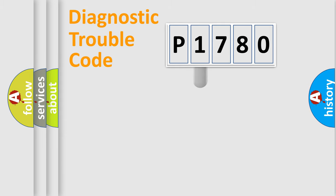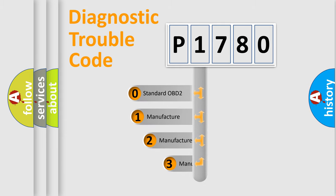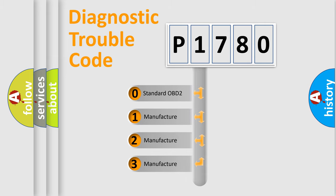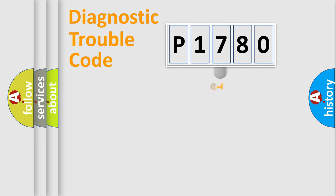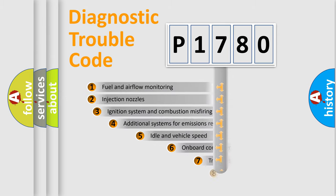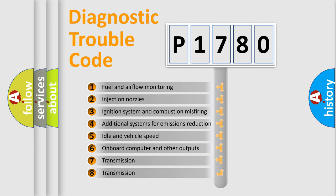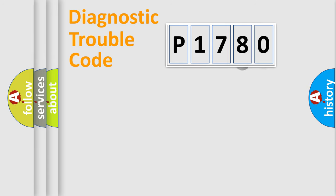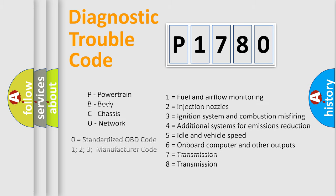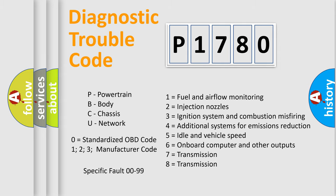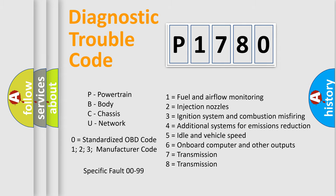This distribution is defined in the first character of the code. If the second character is expressed as zero, it is a standardized error. In the case of numbers 1, 2, or 3, it is a manufacturer-specific error expression. The third character specifies a subset of errors. This distribution is valid only for the standardized DTC code. Only the last two characters define the specific fault of the group, and such a division is valid only if the second character code is expressed by the number zero.